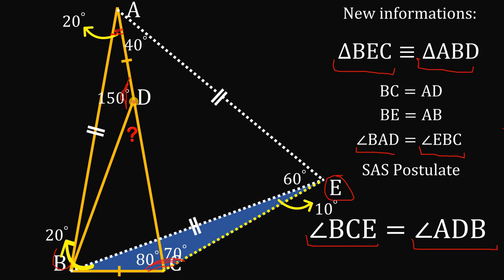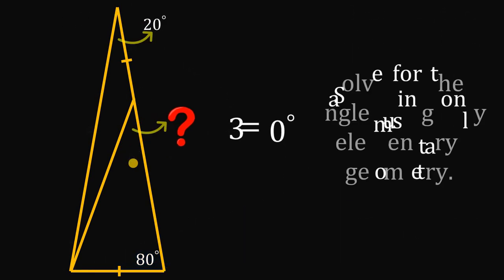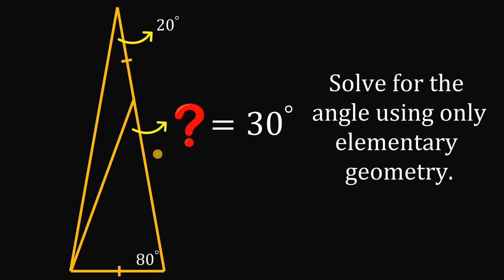We have a straight angle, and these two angles add up to 180 degrees. We have 150 degrees, so the other angle must be 30 degrees — and that is the answer to this question. Therefore, using only elementary geometry, the measure of this angle right over here must be equal to 30 degrees. And, as always, we are done.